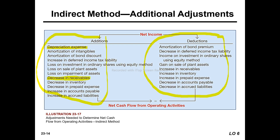Decreasing accounts receivable has a positive effect on net cash flow from operating activities, because it means more cash was collected than revenue recognized. Conversely, if the receivable amount increases, it has a negative cumulative effect on cash flow, because cash collected is less than revenue recognized.